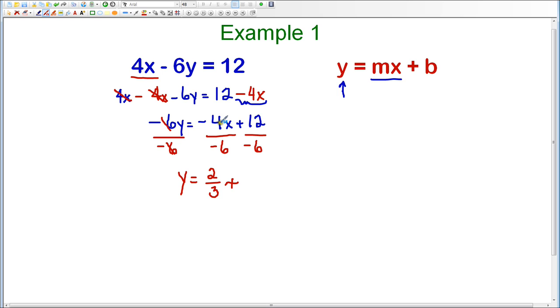So this is 2 thirds X. And then we have 12 divided by negative 6, which is negative 2. So I'm going to write that as minus 2. Now, you could write it as plus negative 2.